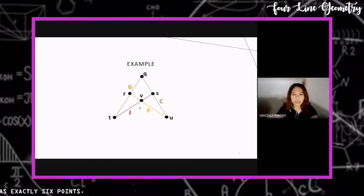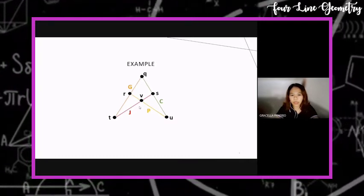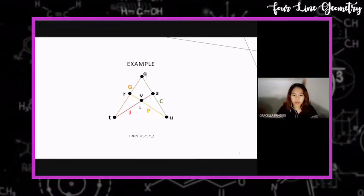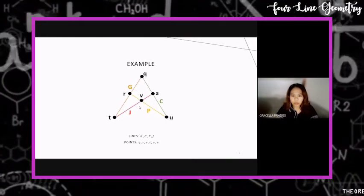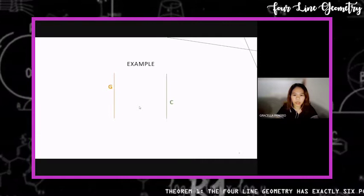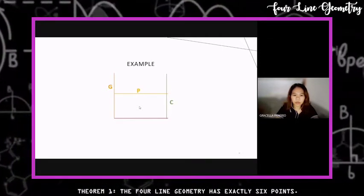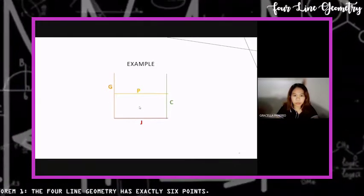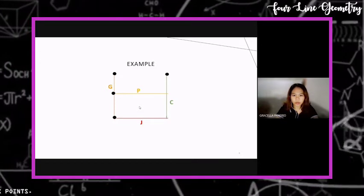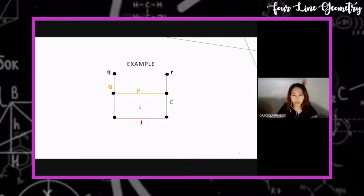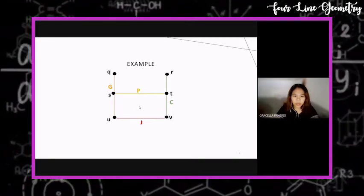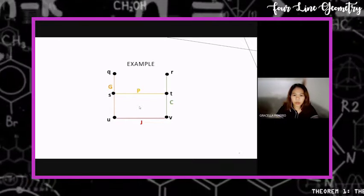By those three axioms and the proof provided, this example shows that four-line geometry has exactly six points. We have lines G, C, P, and J — exactly four lines — and points Q, R, S, T, U, and V, showing there are six points. For the second example, we again have lines G, C, P, and J, and placing points at the intersections, we again obtain six points named Q, R, S, P, U, and B, creating four lines and six points in the graph.